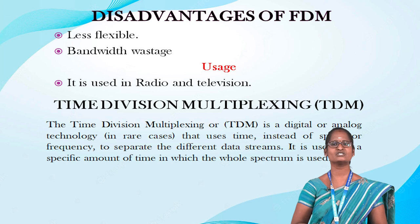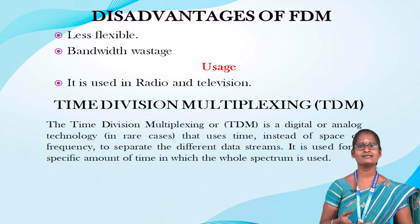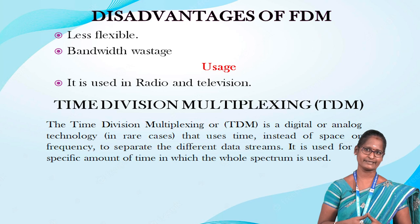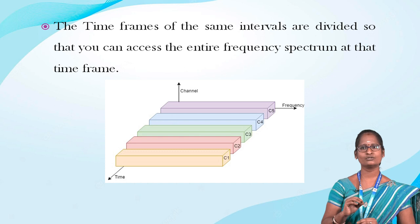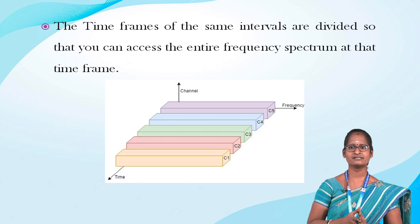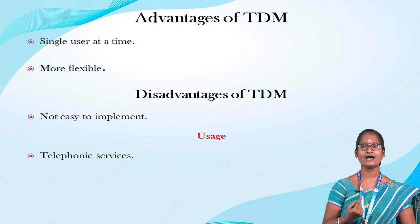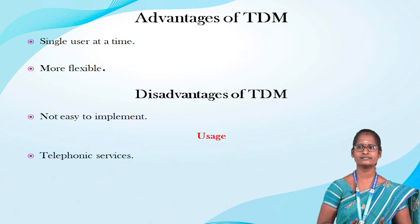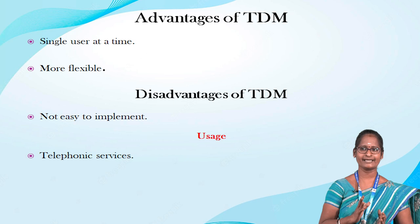The second one is Time Division Multiplexing, shortly called TDM. Time division multiplexing is a digital or analog technology. In rare cases, they use time instead of space or frequency to separate the different data streams. It is used for a specific amount of time in which the whole spectrum is used. The time frames for the same intervals are divided so that you can access the entire frequency spectrum at the time frames. Advantages of TDM: it facilitates a single user at a time, is less complicated, and has more flexible resources in architecture. The disadvantage of TDM is it is not easy to implement. Telephoning services mainly use TDM.